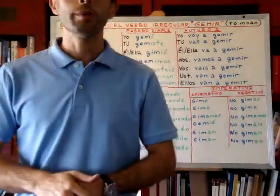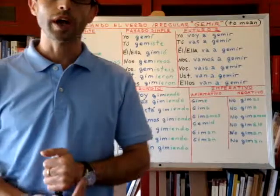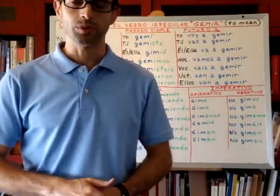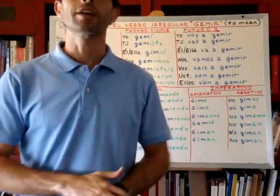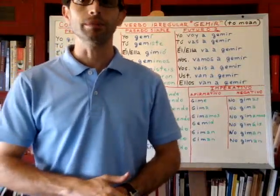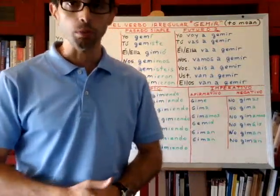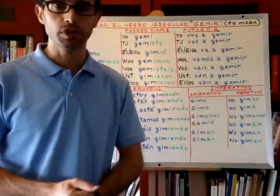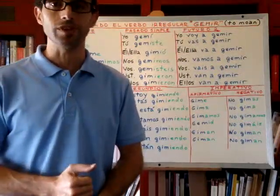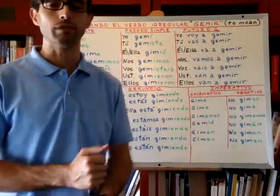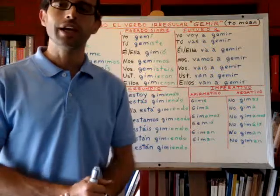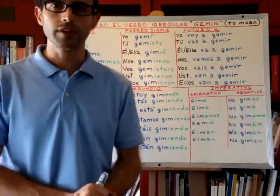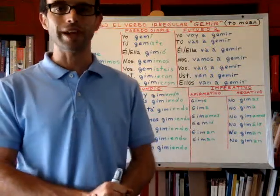Hola, hoy vamos a conjugar el verbo gemir. Hi, today we will conjugate the verb gemir, which means to moan. Este es uno más de los verbos irregulares que comienzan con la letra G.